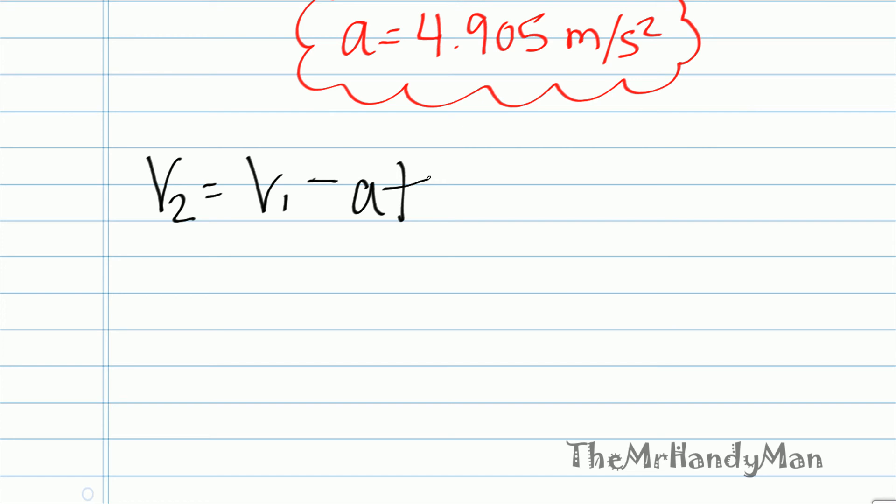Okay, so we have A and we have V1 because that's the initial speed. What's V2? Well, we're looking for V2 when the box has stopped would be 0. And there you go. So, now we're going to solve for that.